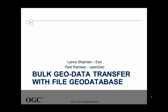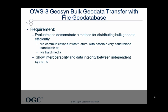This part of the testbed investigates the use of ESRI's open file geodatabase API and the use of file geodatabase in the transfer of bulk geodata. The specific OWS8 testbed requirement is to evaluate and demonstrate a method for distributing bulk geodata efficiently using a method that will work over COMPS infrastructure, both high bandwidth or possibly very constrained bandwidth. So data compression is important, and in some cases might be sneaker net using hard media such as CD, DVD, or memory sticks.